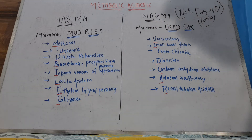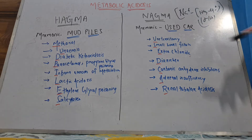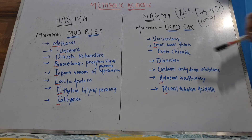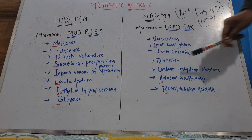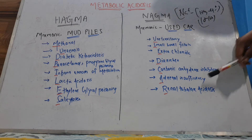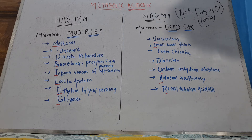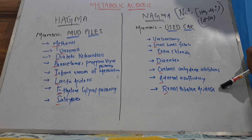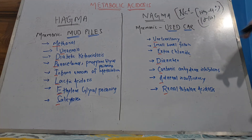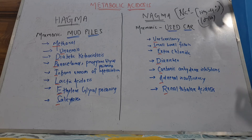And this is normal anion gap metabolic acidosis — the mnemonic is USED CAR. U is ureterostomy. S is small bowel fistula. E is extra chloride. D is diarrhea. C is carbonic anhydrase inhibitors. A is adrenal insufficiency. R is renal tubular acidosis. I hope this mnemonic really helps for your exams.